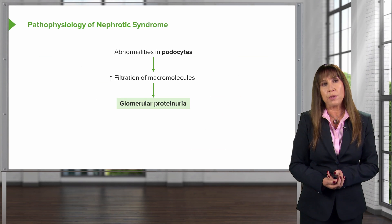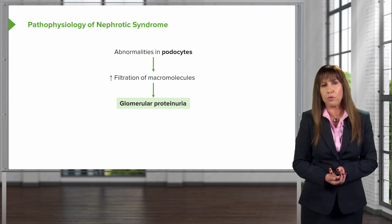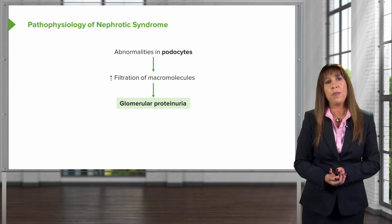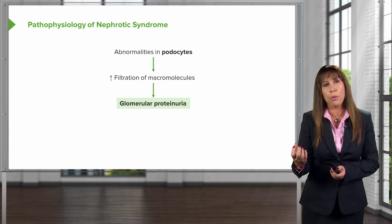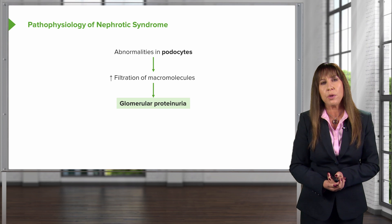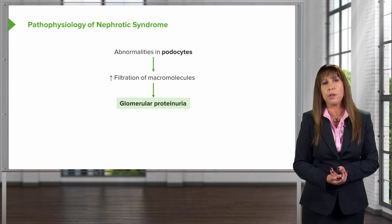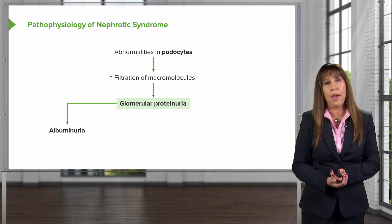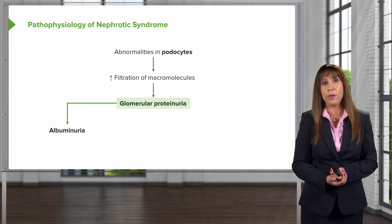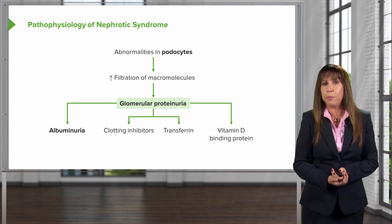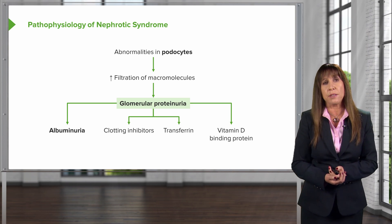Let's talk about these more closely to better understand the pathophysiology. For proteinuria, we have high-grade proteinuria greater than 3.5 grams, and we know this is glomerular proteinuria because the principal component is albumin. Patients with nephrotic syndrome have an increase in filtration of macromolecules across the glomerular capillary wall because of abnormalities in the glomerular epithelial cells — the podocytes. Albumin is the principal protein lost in glomerular proteinuria. We can also lose clotting inhibitors, transferrin, and vitamin D binding protein, but the predominant loss is albumin.